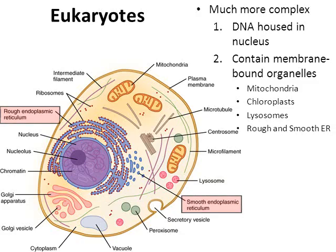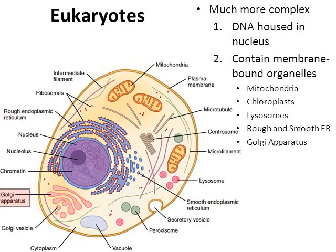Lysosomes help to digest and break down certain food particles, and they also are membrane-bound. The rough and smooth endoplasmic reticulum are also membrane-bound — the rough endoplasmic reticulum helps in the production of proteins, and the smooth endoplasmic reticulum helps to build up fats and lipids. The Golgi apparatus is another example of a membrane-bound organelle; it helps to sort, package, and distribute proteins around the cell. At the bottom we have a vacuole, which is kind of like the storage container — membrane-bound as well.